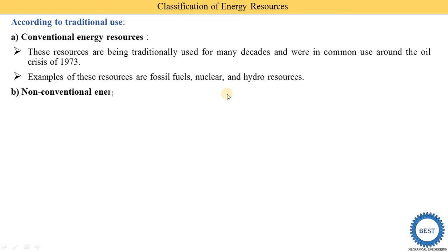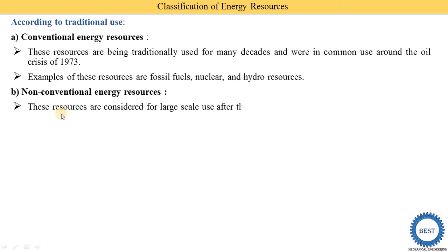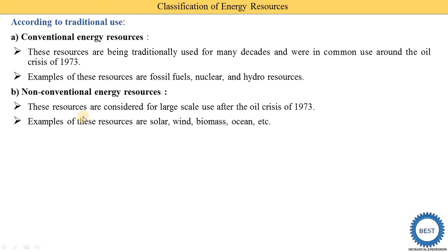The second type under traditional use is non-conventional energy resources. These resources were considered for large-scale use after the oil crisis of 1973 — meaning resources that industries and individuals started using after 1973. Examples are solar, wind, biomass, and ocean energy. From these examples we can conclude that conventional energy resources are non-renewable, while non-conventional energy resources are renewable.